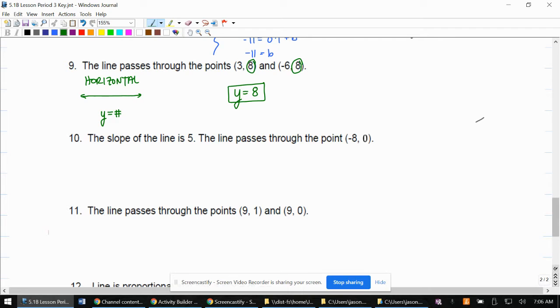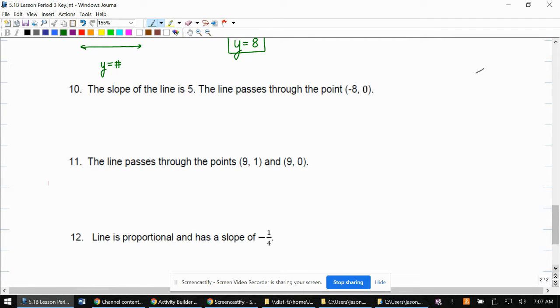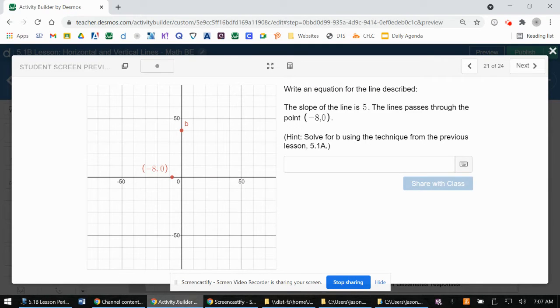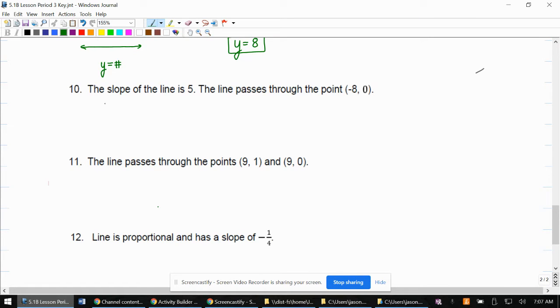This is number 10 in the module. The Desmos activity gives us a hint that we need to solve for b. If we look at our graph, we get a sense that this is not horizontal or vertical.